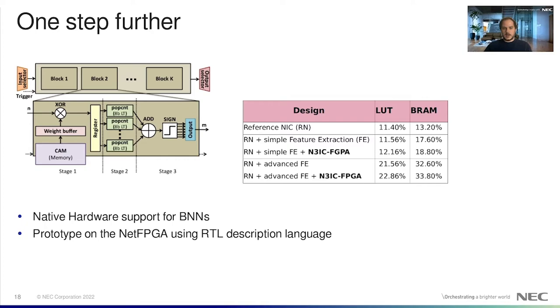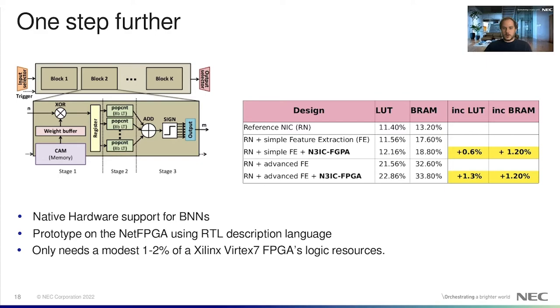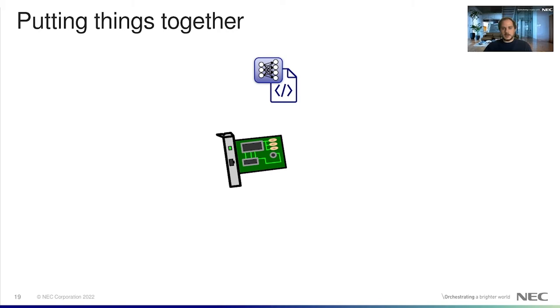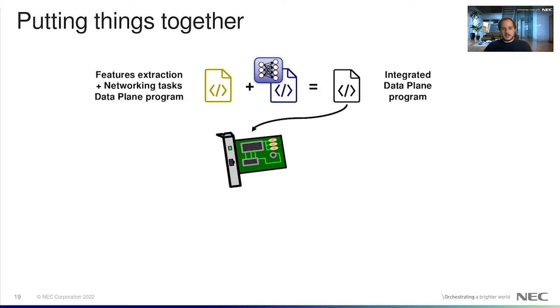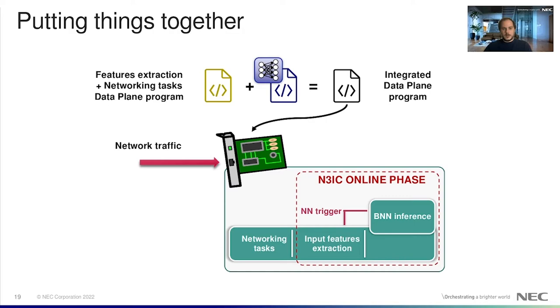Until now, we showed how a BNN model can be executed in the data plane, but this is just a building block of the final data plane program. In fact, flow-level feature extraction and forwarding tasks still have to be included. After the feature extraction and the machine learning programs are integrated, it is then possible to load the program in the SmartNIC and process network traffic. During the online phase, the feature extraction is executed for each packet in the flow, while the BNN inference is triggered periodically depending on the configuration.